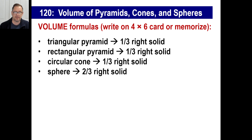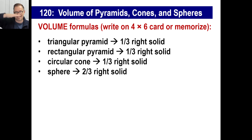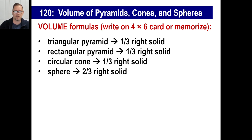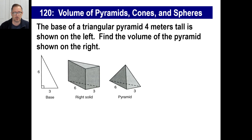In other words, if you know how to find the volume of a tin can — the area of the base times the height — and you were to find a bowling ball that fit exactly into a big tin can where the edge exactly touched the top, the bowling ball would be two-thirds of the can that it sat in.